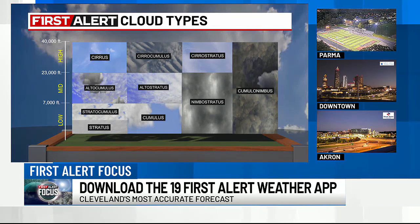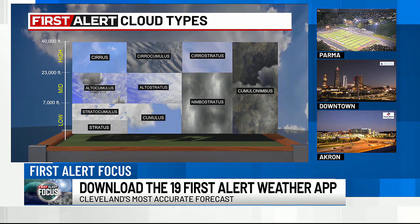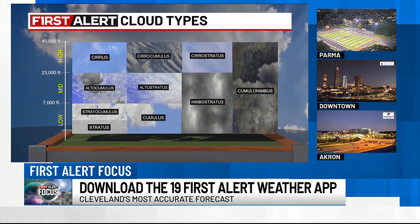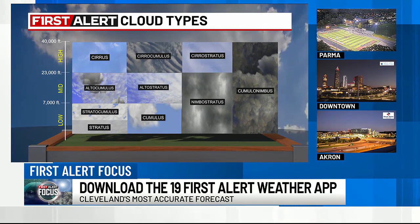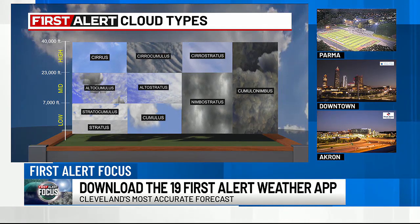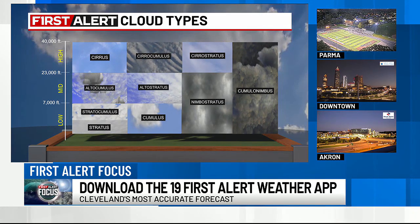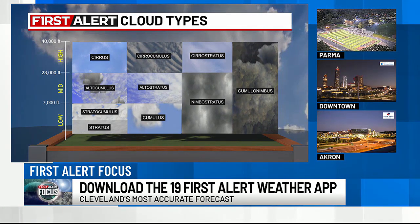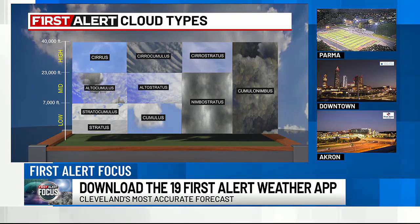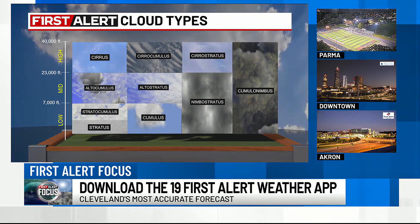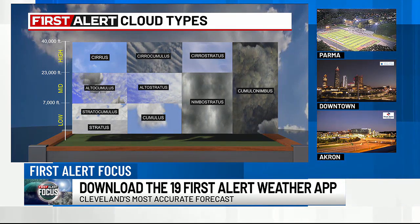Sometimes we get low stratus clouds that look like big blankets. Then in our cumulus category, we do have high cumulus clouds — we call those altocumulus. You've probably heard of thunderstorm clouds, or cumulonimbus clouds.